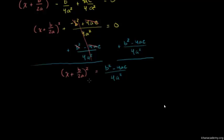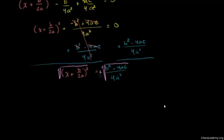Now the next thing we want to do, if we want to solve for x, is to take the square root of both sides of this equation. When we do that, we don't want to only take the positive square root, because x plus b over 2a could be a negative or a positive number. So we want to take the positive and negative square root. We can write this square root as equal to plus or minus the square root of b squared minus 4ac over 4a squared.